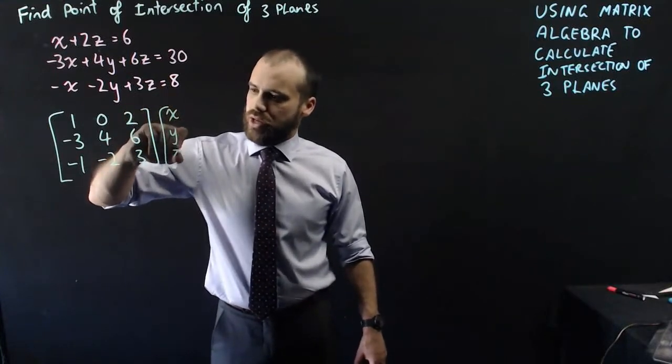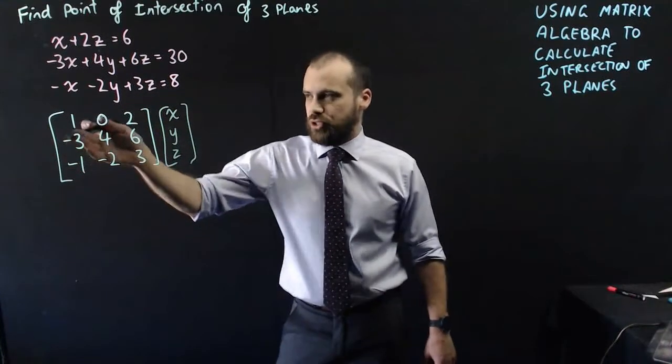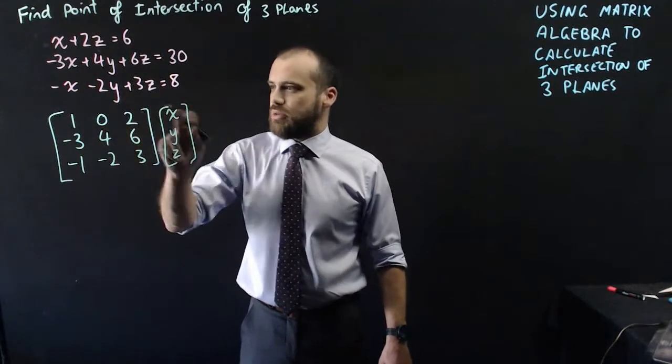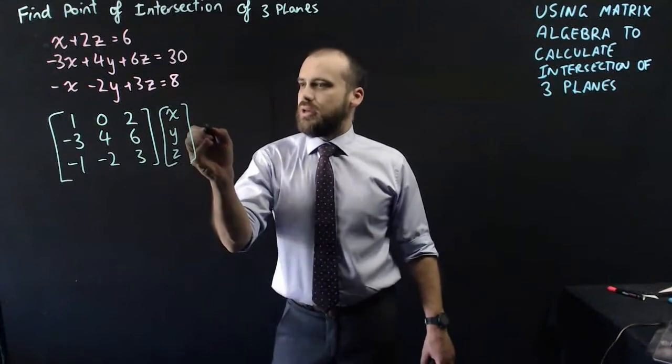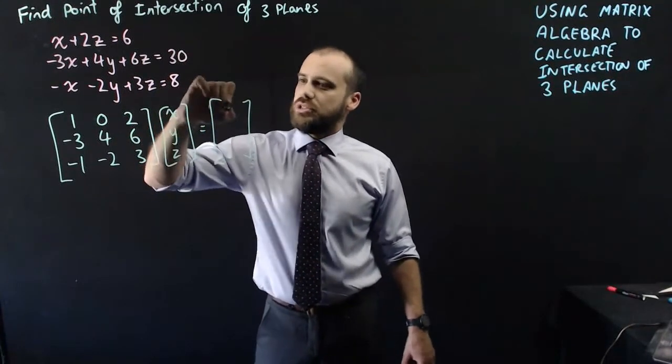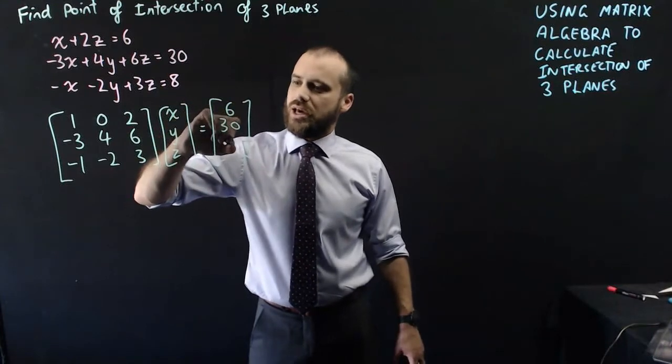And then we put x, y, and z there. Now if we did matrix multiplication here, we'd end up spitting out these equations. 1 times x, 0 times y, 2 times z. And then that's going to be equal to the solutions here: 6, 30, and 8.